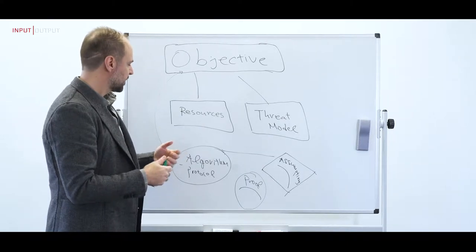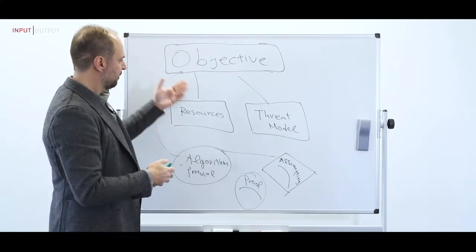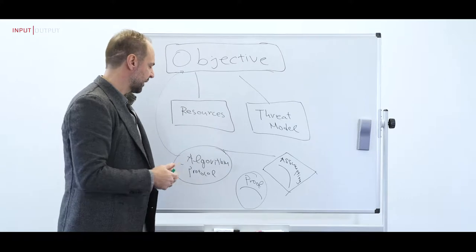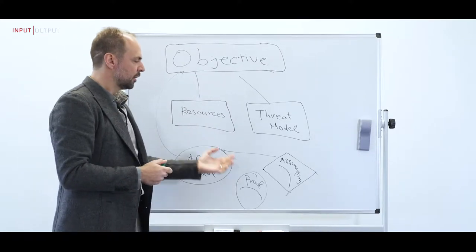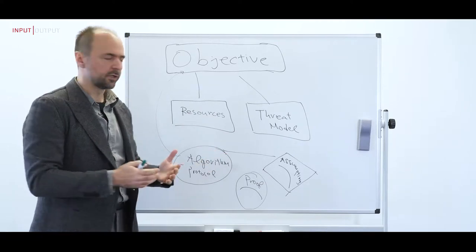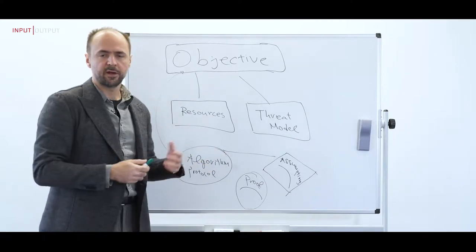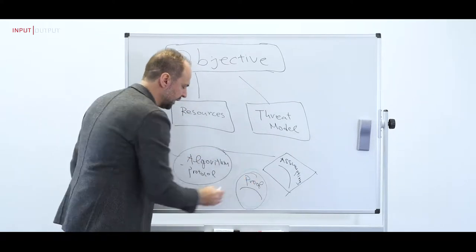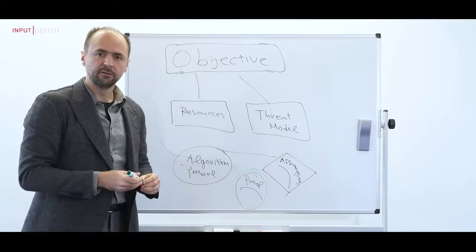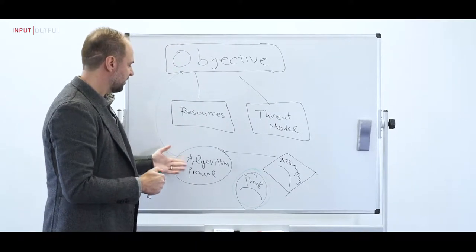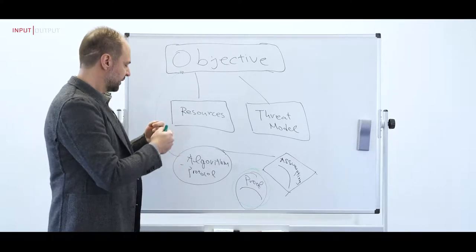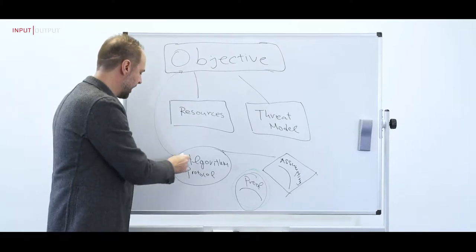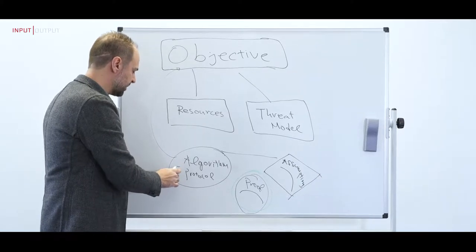That security proof is going to establish that the algorithm meets the objective given the resources and threat model that we have specified, under the assumptions we have described. This is the general logic we use in modern cryptography to argue that protocols are secure. Designing protocols follows a feedback between those elements — sometimes we have to revisit the resources, the threat model, fine-tune the algorithm, look at the proof, and iterate again.